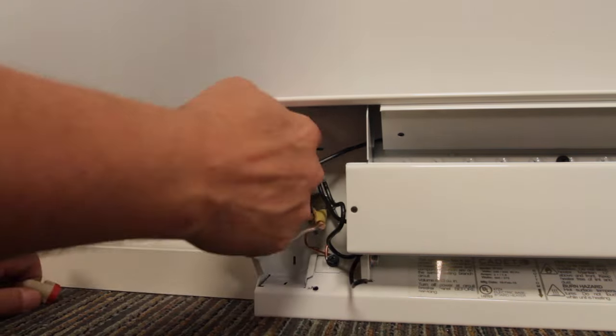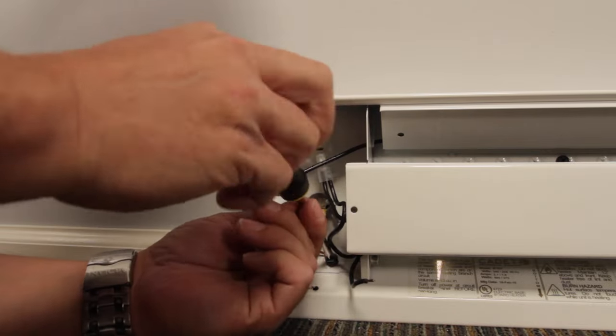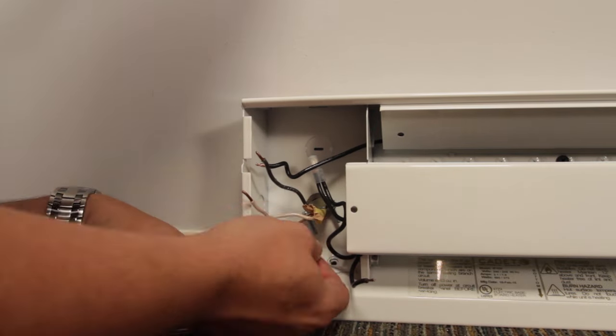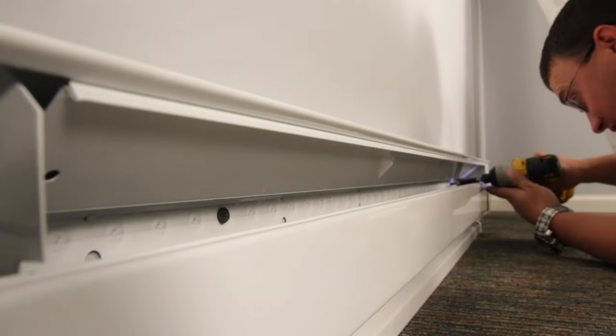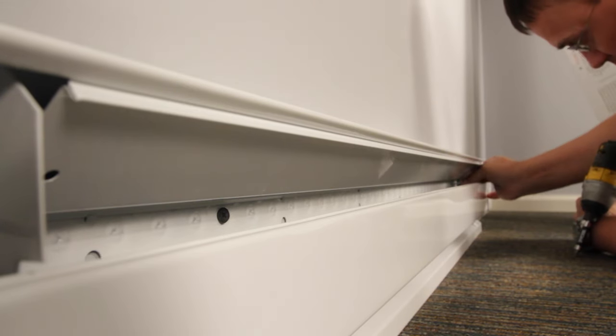In our case, our wires are attached with wire nuts. Unscrew the green ground screw and remove the bare copper ground wire. Unscrew and remove the mounting screws that hold the heater to the wall.